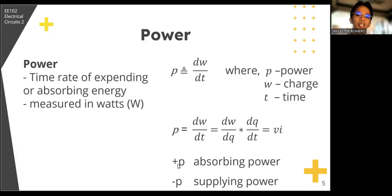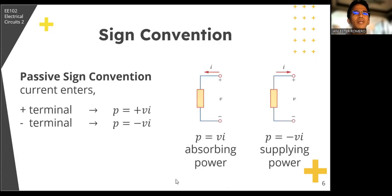If the power has a positive sign, then power is being delivered to or absorbed by the element. If on the other hand, the power has a negative sign, then power is being supplied by the element. But how do we know when the power has a negative or positive sign? The answer is, it is by the passive sign convention.